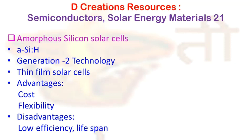Amorphous silicon is pure silicon which has no crystal properties — as the name 'amorphous' suggests, you can immediately guess that. Since it is not crystalline, the atoms are randomly distributed. The most common example of an amorphous substance is glass.